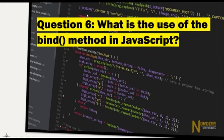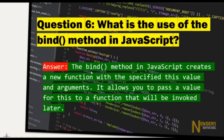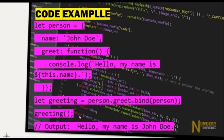Question number six: What is the use of the bind method in JavaScript? The bind method in JavaScript creates a new function with the specified 'this' value and arguments. It allows you to pass a value for 'this' to a function that will be invoked.